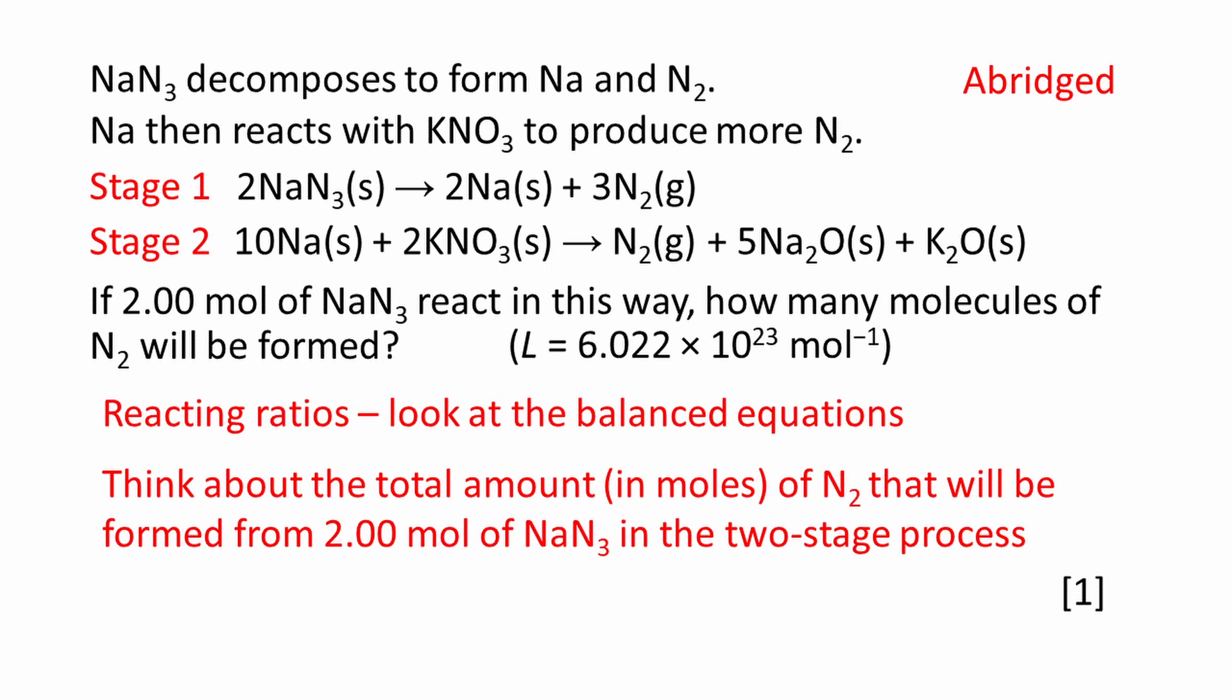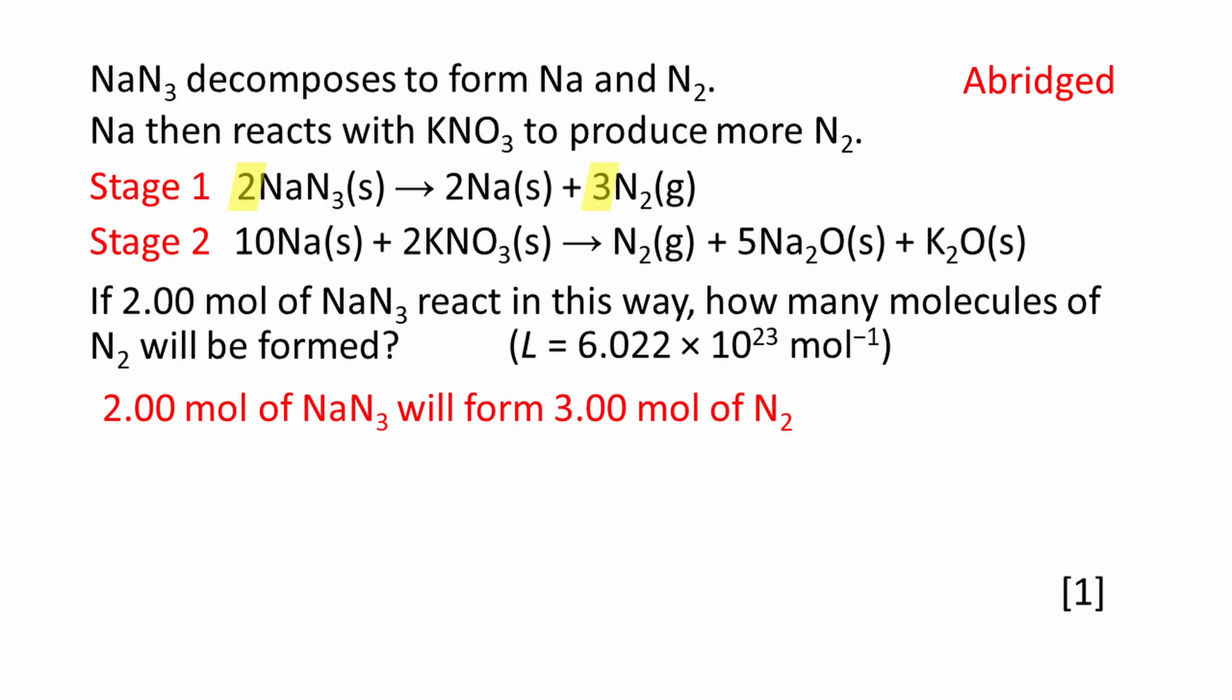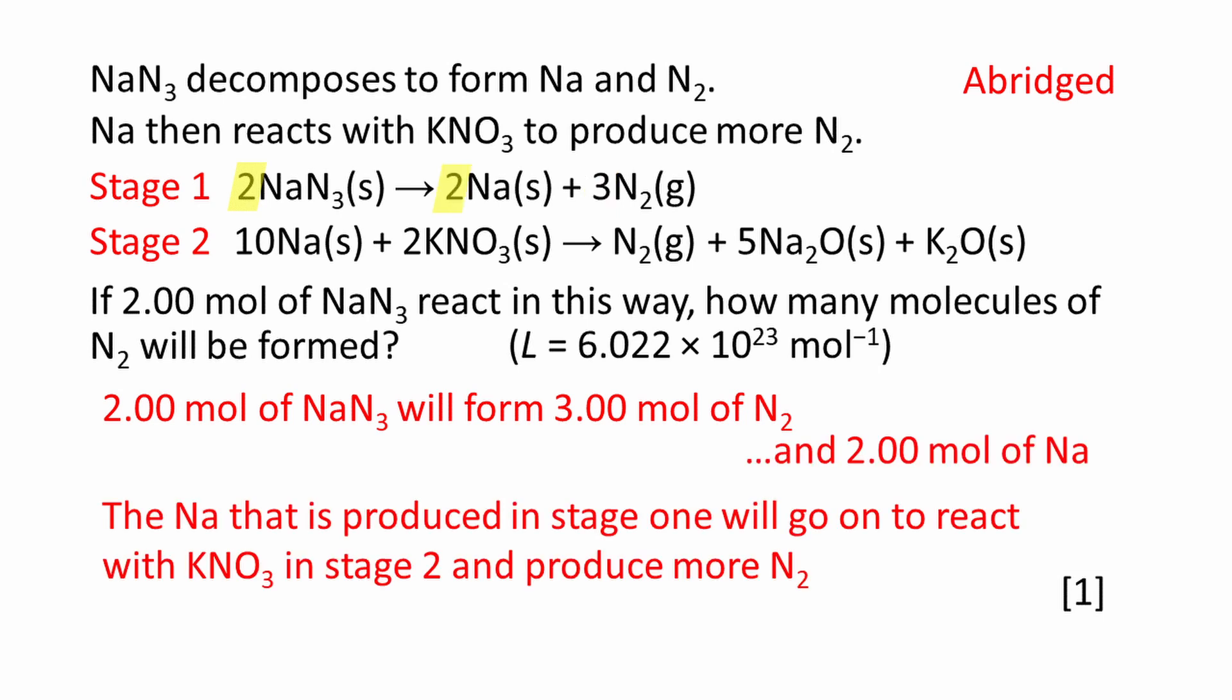If we look at stage one, 2.00 mole of NaN3 will form 3.00 mole of N2. 2.00 mole of Na will also be produced in stage one. The Na that is produced in stage one will go on to react with KNO3 in stage two and produce more N2.